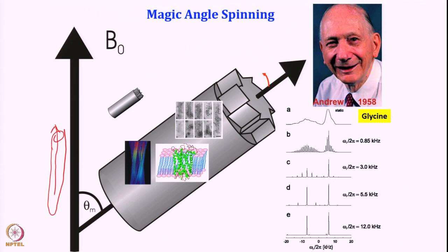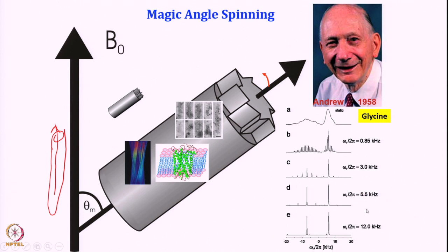12 kilohertz means 12,000 rotations per second — quite fast compared to an ultracentrifuge which does about 100,000 rpm, that is rotations per minute. Here we are talking about 12,000 rotations per second, which is very fast. The rotor material has to be really robust. These rotors are made of zirconium oxide, which is temperature-insensitive and can spin very fast. This is a moderate spinning speed; nowadays rotors can go up to 110 kilohertz, which requires a special arrangement.